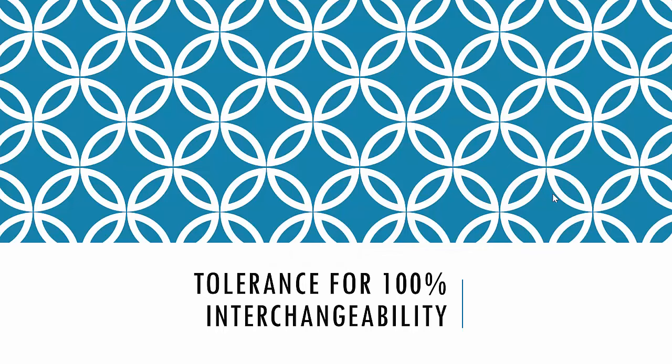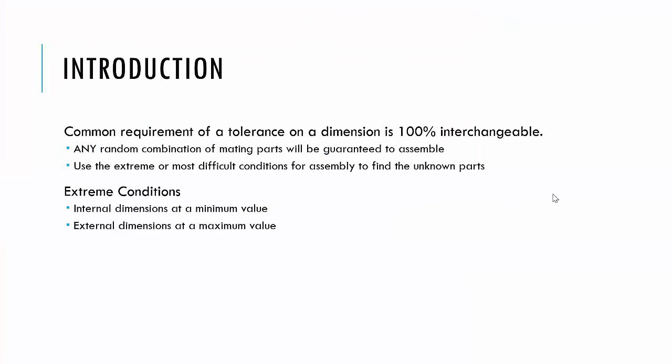Tolerance for 100% interchangeability. The common requirement of a tolerance is that the parts be 100% interchangeable. So any random combination of parts, we have to be sure they're going to assemble. So what we do is we use the extreme conditions, the most difficult conditions for assembly, to find the parts we don't know. So how do we do that? We take internal dimensions at a minimum value, external dimensions at a maximum value.